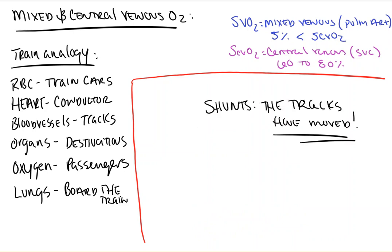Shunting is another way that central venous oxygen may wind up higher than normal. Imagine the train simply takes an alternate route, bypassing destinations to unload people — or the blood bypasses tissue to oxygenate. Therefore, patients with fistulas, for example, or any type of abnormal connection between the arterial and venous system, will skip tissue to oxygenate and wind up back at the sampling site. Those passengers never get off at those destinations. As a result, shunts can cause a patient to have increased amounts of oxygen returning to the central venous system. So, shunts increase SVO2.